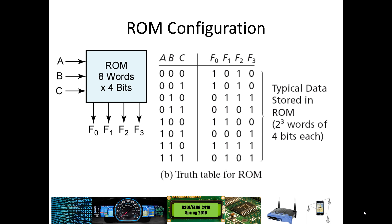So how does a ROM work? It's basically a lookup table where you have address lines used to select which particular word you're interested in, and then data lines to pull back that particular data word. In this example, we have an 8-word ROM — a very small ROM — where each word has 4 bits. You can select 1 of 8 using 3 select lines, very similarly to a multiplexer. Put in 0, 0, 0 and you get whatever entry is in the 0th location. This particular data is just one typical example from the textbook of how things could be stored.